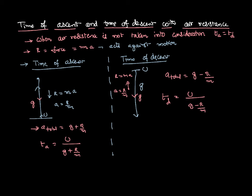It is clear from this discussion that the denominator G plus R by M for time of ascent is larger, so the fraction is smaller. The denominator G minus R by M for time of descent is smaller, so the fraction is larger. Therefore, time of ascent is less than time of descent — they are not equal. If air resistance is neglected they are equal; otherwise, the body takes less time going up and more time coming down.